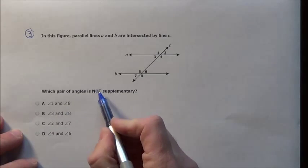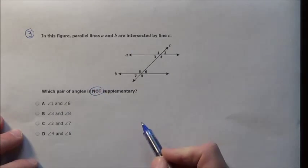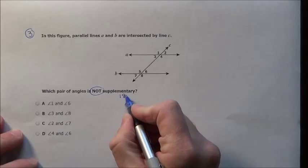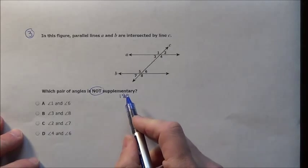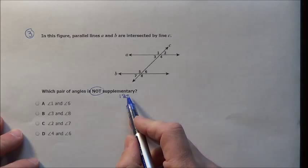The question asks which pair of angles is NOT supplementary. Remember, supplementary means they add up to 180 degrees. So which of these angles do not add up to 180 degrees?